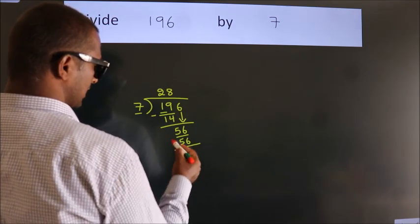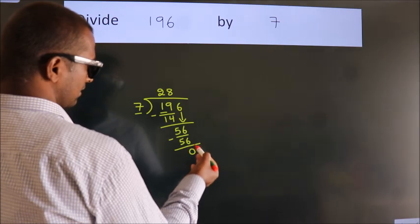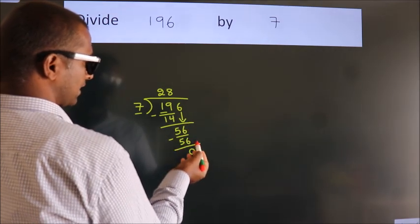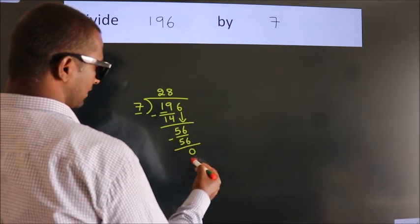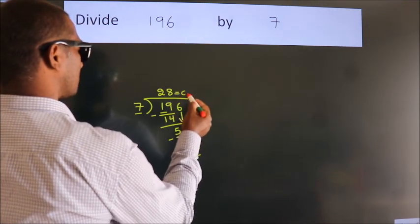Now we subtract. We get 0. After this, no more numbers to bring down and we got remainder 0. So this is our quotient.